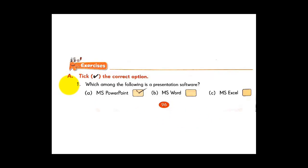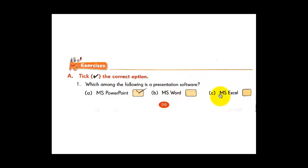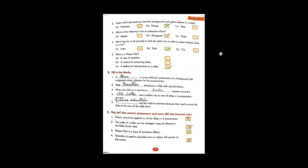Question one: Which among the following is a presentation software? Options are MS Word, MS Excel, and MS PowerPoint. MS Word — no. MS Excel — no, that is a spreadsheet. MS PowerPoint — yes, this is a presentation software. You have to click on MS PowerPoint.